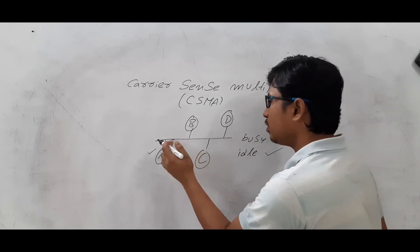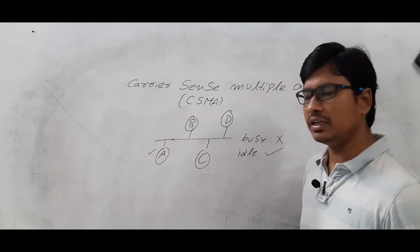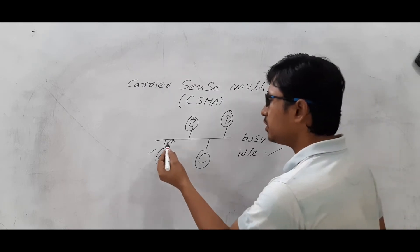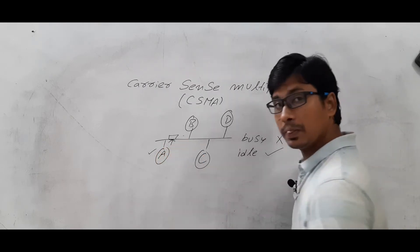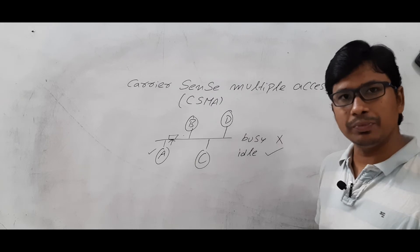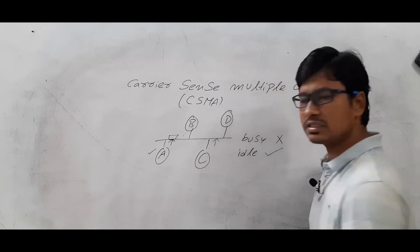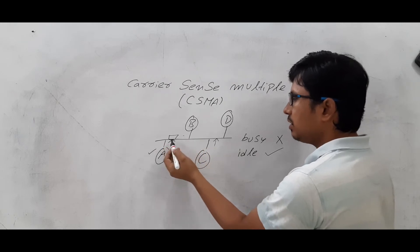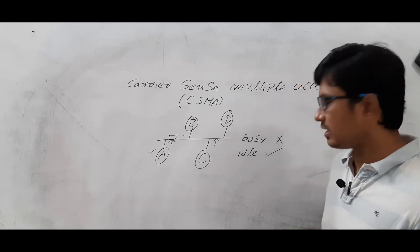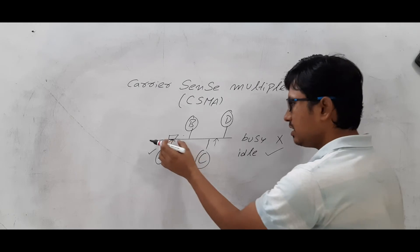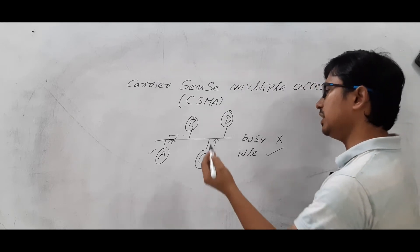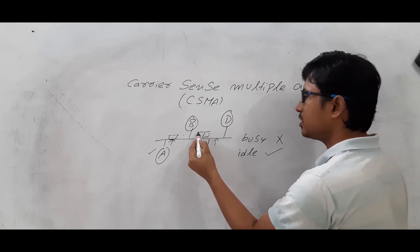Let's take that node A wants to transfer the data to node B. First it will sense the channel. Once the channel is idle or free, it will transfer the frames. In the meantime, node C wants to transfer data to node B. It will also sense the channel. Since the frames from node A are still traveling, when node C checks the channel it may appear idle. So node C can also transfer the frames to node B.